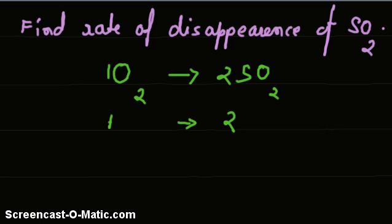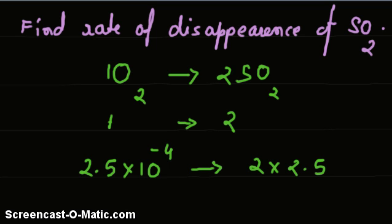Therefore, the rate of disappearance of SO2 will be 2 into 2.5 into 10 raised to minus 4, which is equal to 5 into 10 raised to minus 4. So, that is our answer.